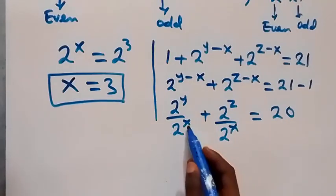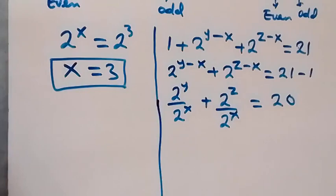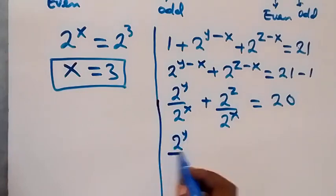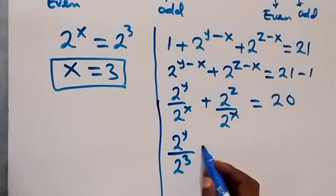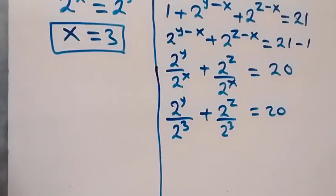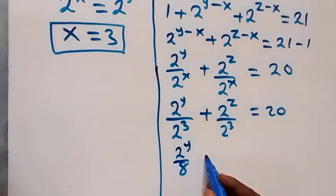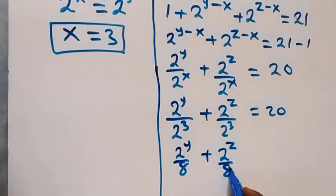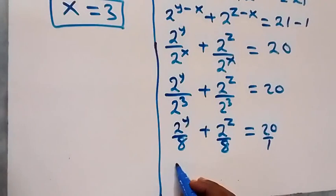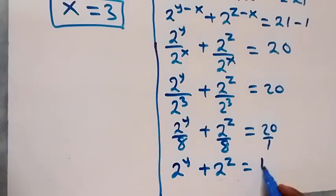Substituting x equals 3, we have 2 raised to power y over 2 raised to power 3 plus 2 raised to power z over 2 raised to power 3 equals 20. Since 2 raised to power 3 is 8, this becomes 2 raised to power y over 8 plus 2 raised to power z over 8 equals 20. Clearing the fraction by multiplying through by 8, we get 2 raised to power y plus 2 raised to power z equals 160.